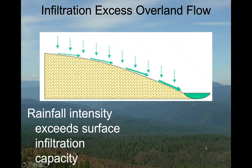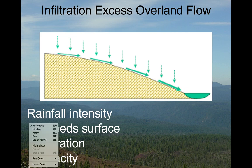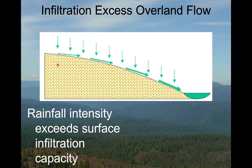Infiltration excess overland flow occurs when it is raining harder than water can soak into the ground — rainfall intensity is greater than the infiltration capacity. In this illustration, it's raining on a bedrock surface; water can't infiltrate into the bedrock, so it's running off overland into the stream.